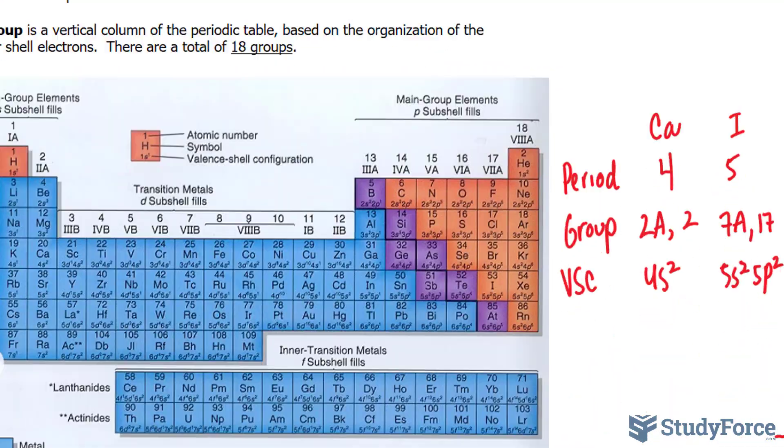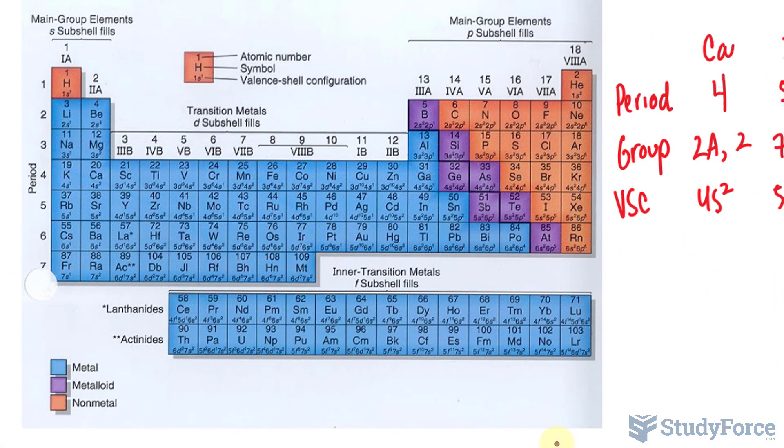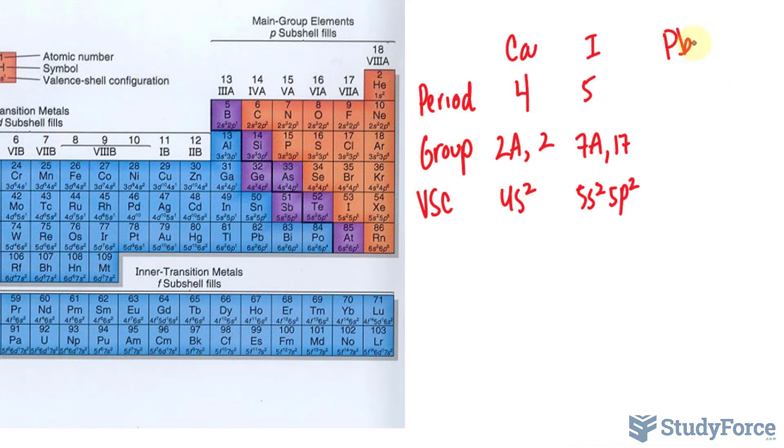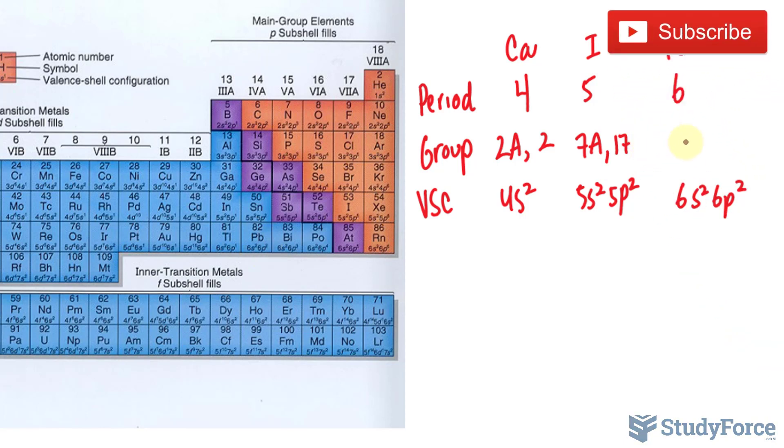And for lead, lead is Pb. It's found right here. It's the 82nd. So Pb, that's the 6th period. The valence shell configuration is 6s2, 6p2, and the group is right here. So it's group 14, and in the American notation, we write down 4a, or 14. The family name for all elements found in group 14 are called carbons.